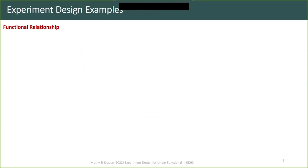Let me give some background on what experiment design means in more detail. What we need is: first, a functional relationship; second, a task or utility — what we want to do with it; third, an observational model; and fourth, the space of possible experiments. Given all these four things, the problem is completely specified — whether in Markov chains, whether with policies or without — this quadruplet is always needed.